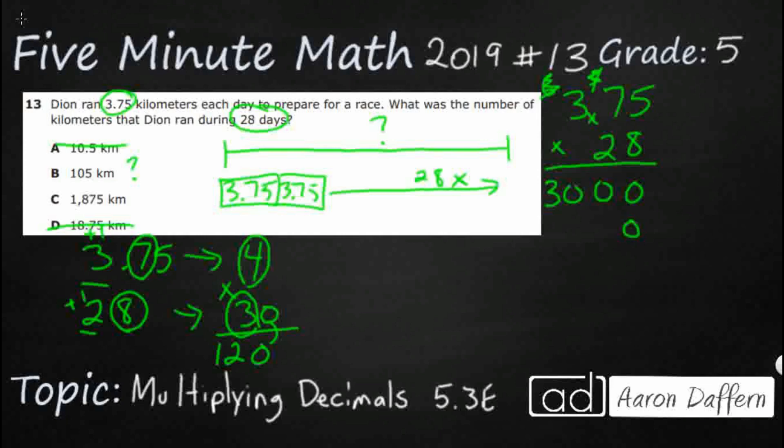We're going to bring down 0, and let's do it again. 5 times 2 is 10. Let's see, we've got 2 times 7 is 14. Add that 1 back in, that's 15. And then we get 2 times 3, that's going to be 6, so 7. Alright, so we're going to add this up.